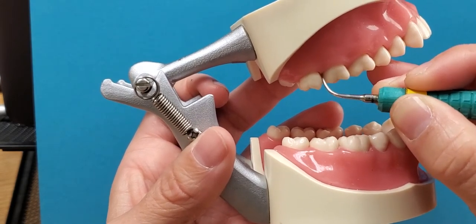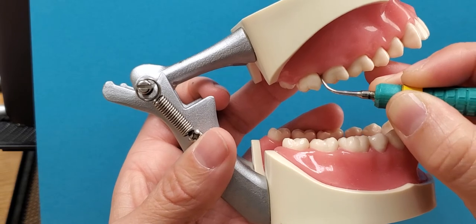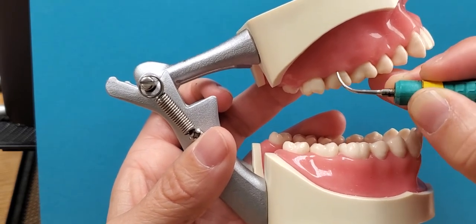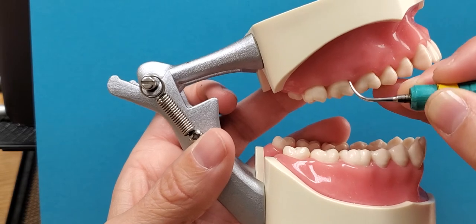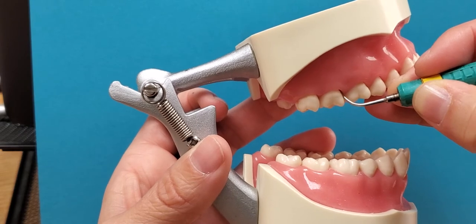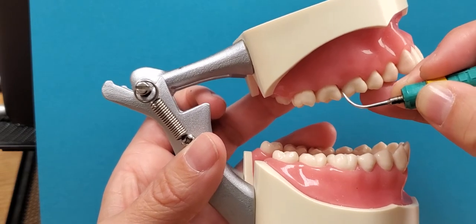In the interproximal spaces you're going to use a tapping motion. You want to tilt into that col space. We use a sweeping motion across the straight buccal, straight lingual depending on where you're at, and then tapping motion again into that mesial contact space.